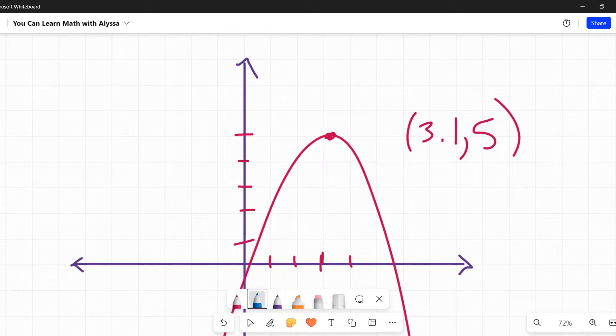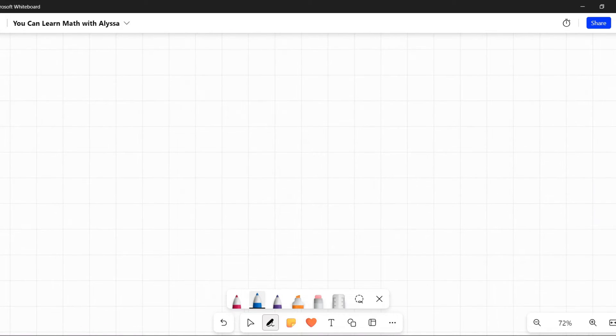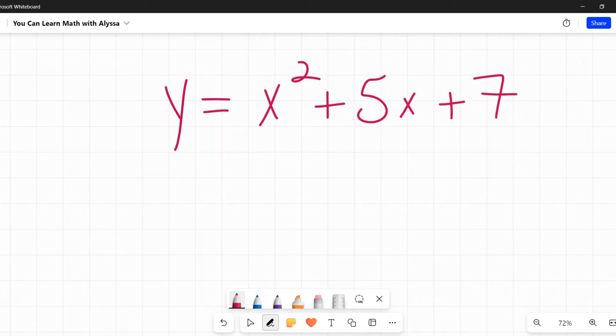When you are given the equation, and this can be any quadratic equation, like let's say Y equals X squared plus 5X plus 7, picking random numbers here. Now, you may or may not be allowed to graph this on a calculator. A lot of students, once they learn that they can just graph it and kind of zoom in and see where that vertex is, they can just type this in the graphing calculator, find the vertex, boom, I'm done. It's not always an option. Sometimes when you have a test or worksheet, they want you to do this mathematically, not graphically. Here's how you do that.